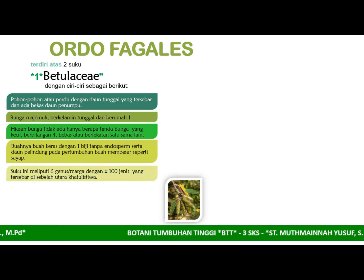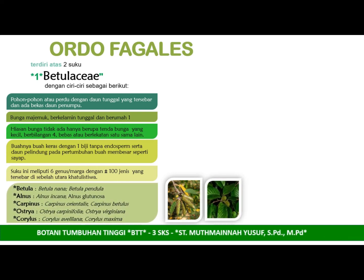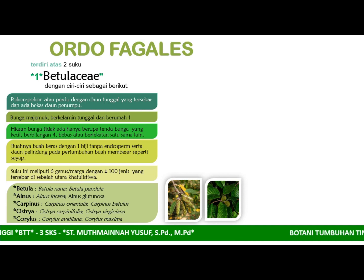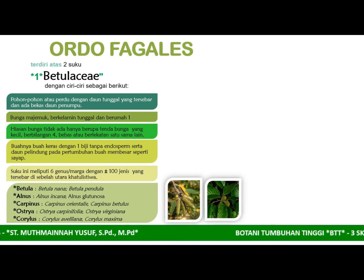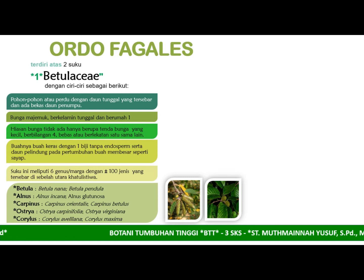Suku ini terdiri dari 6 genus dengan kurang lebih 100 jenis yang tersebar di daerah iklim sedang. Spesiesnya ada kurang lebih 100 jenis dengan 6 genus yaitu ada Betula, Alnus, Carpinus, Ostrya, dan Corylus. Ini adalah genus-genus dari ordo Fagales suku Betulaceae.